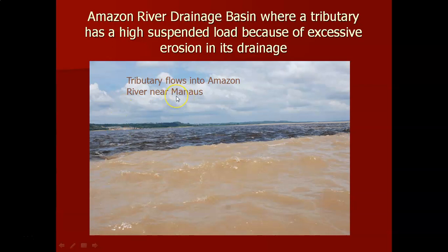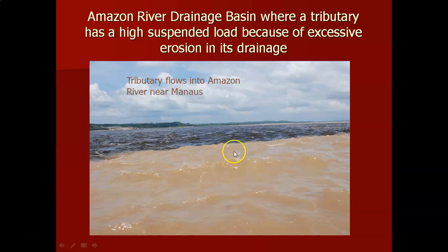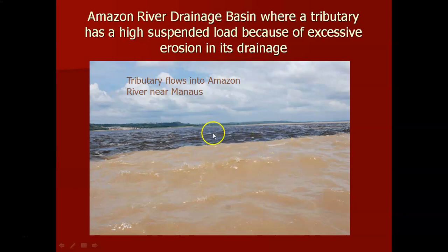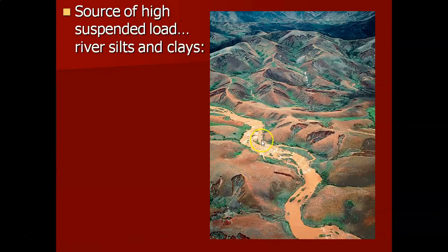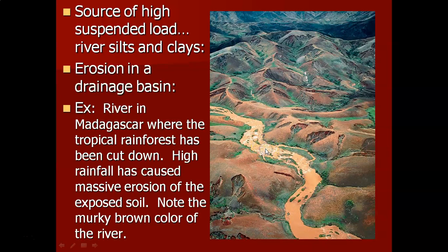I attended a conference in Manaus, Brazil, in the middle of the Amazon River Basin. We took a boat ride where the tributary called the Rio Negro enters the Amazon River. There's tremendous deforestation going on in the Rio Negro drainage, causing a lot of erosion once you remove the protective vegetative cover. For seven miles, you've got a sharp boundary between the murky colors of the tributary and the clear waters of the Amazon — a big indicator of erosion in that drainage basin.